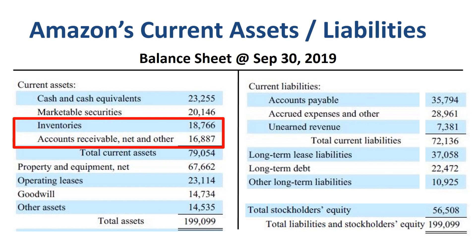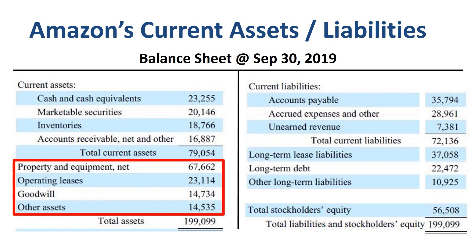Inventories are $19 billion. This number excludes inventory related to fulfillment services where third-party sellers sell through the Amazon site — the third-party seller owns that inventory, not Amazon. Accounts receivable, after deducting the allowance for doubtful accounts, are $17 billion. Non-current assets are $120 billion. The two largest amounts in non-current assets are property, plant and equipment of $68 billion, and operating leases of $23 billion. Operating leases is a new item on the balance sheet, as the new accounting standard for leases was adopted in 2019. The corresponding amount on the liabilities side is in the long-term lease liabilities account.